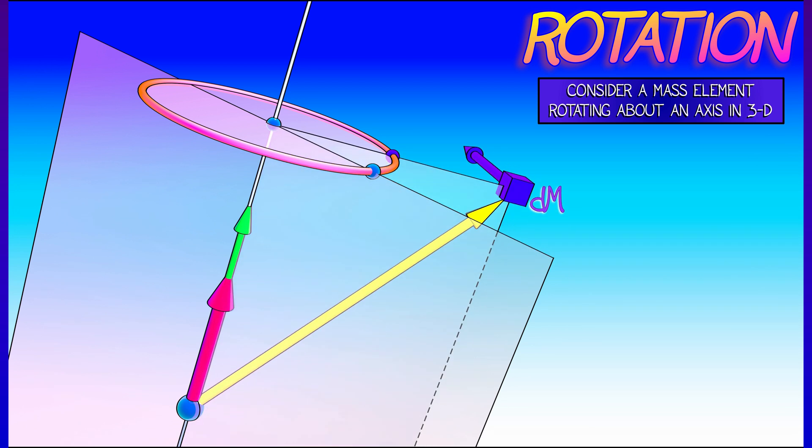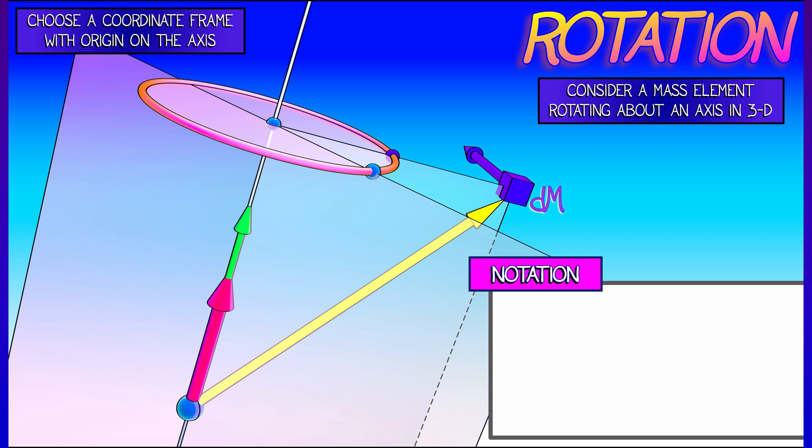I'm going to call that mass element dm, and then I'm going to fix a coordinate frame that has its origin somewhere on that axis of rotation. Having done that, let's define the position vector from that origin to the mass element. Let's call that vector r.